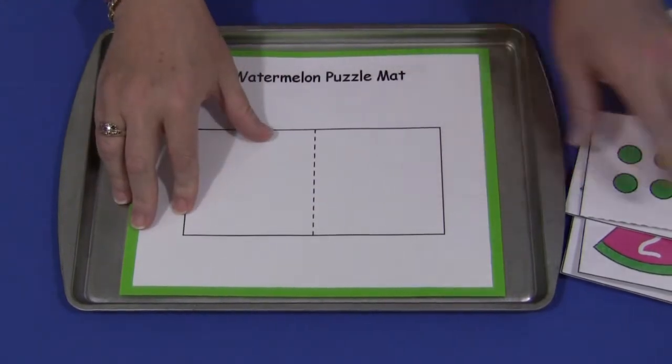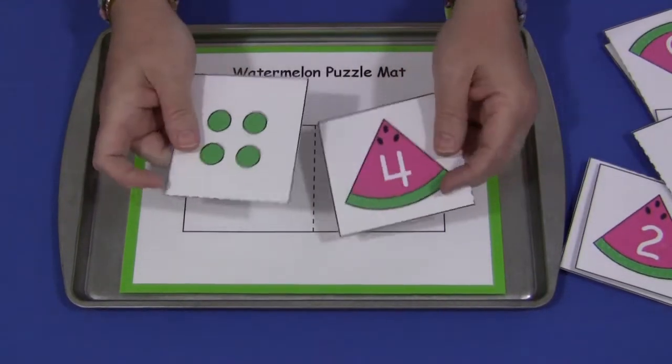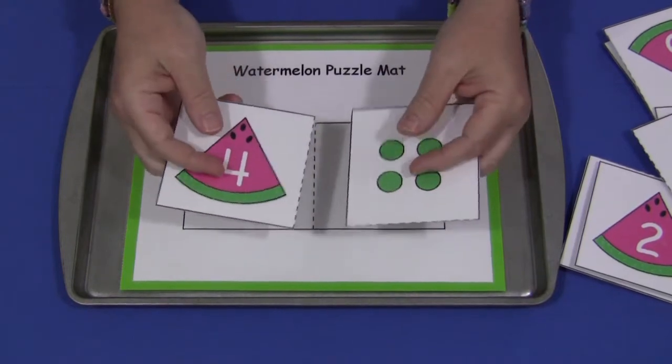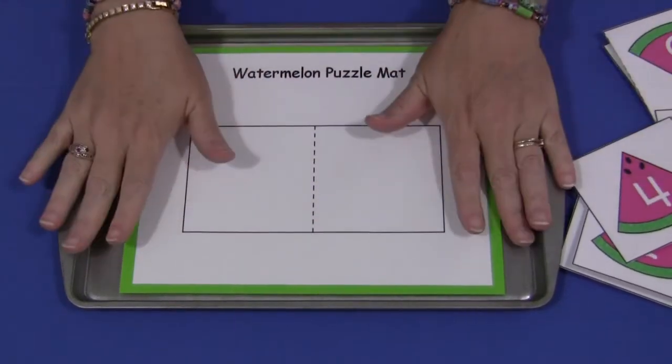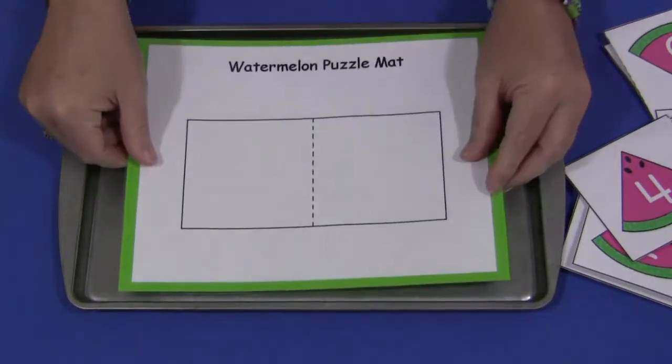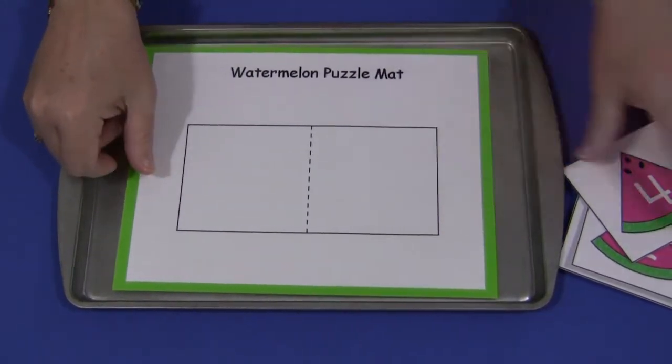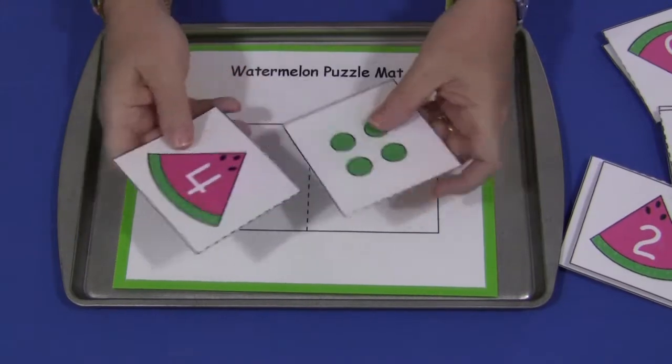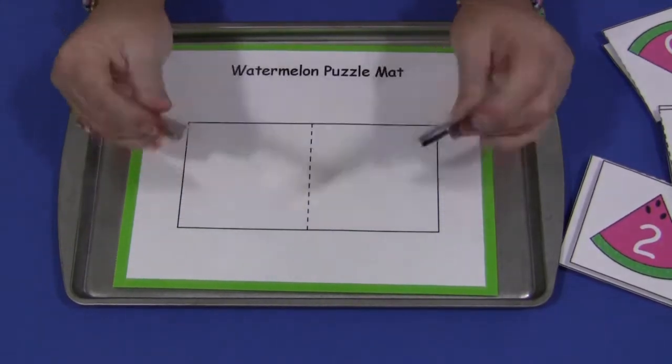But you certainly don't have to use this. These can be used on the floor or on the table just as is. But I like to have the puzzle mat on top of a metal tray and I put magnets on the back so that secures the puzzle mat and then on the puzzle pieces themselves on the back I also put a magnet so that will stay on the tray.